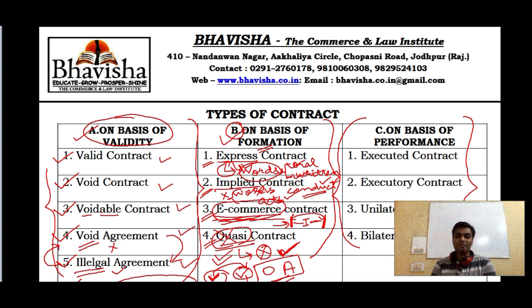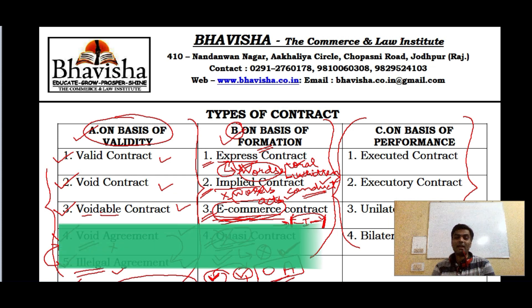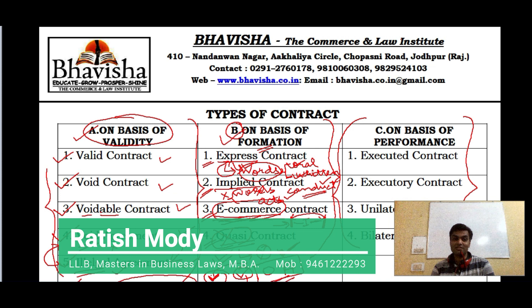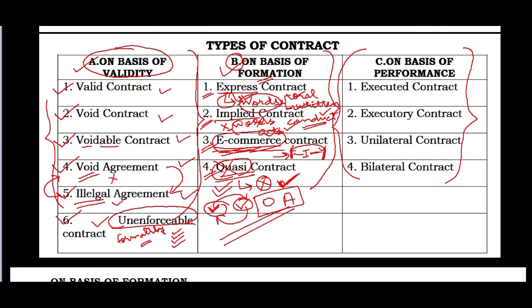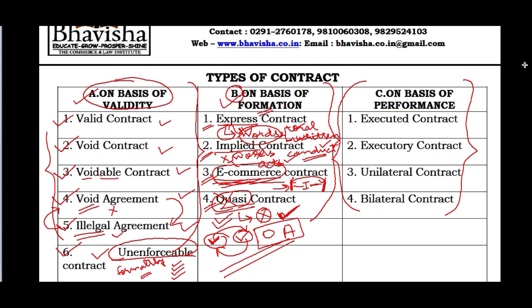Welcome back students. We were discussing the types of contracts. We primarily categorized them in three ways: first on the basis of validity, which included valid contract, void contract, voidable contract, void agreement, illegal agreement, and unenforceable contracts. After that we discussed types of contracts on the basis of formation, which included express contracts, implied contracts, e-commerce contracts, and quasi contracts. Let's do a quick revision.